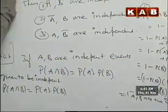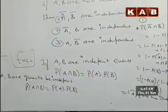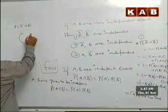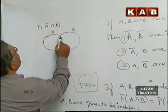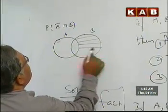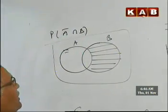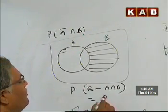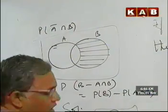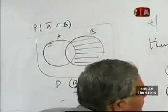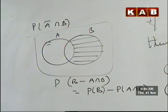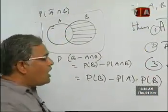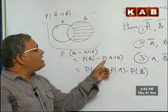Now for the second part: probability of A̅ intersection B. From the Venn diagram, A̅ intersection B is the region B minus A intersection B. So probability of A̅ intersection B equals probability of B minus probability of A intersection B. This holds because for B, A intersection B is a subset. Since A and B are independent, this becomes probability of B minus probability of A into probability of B.